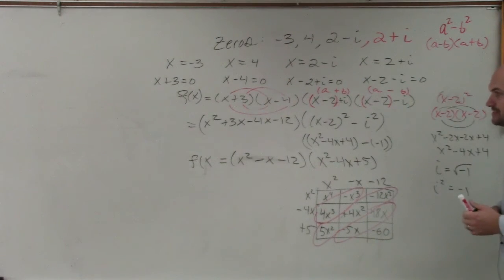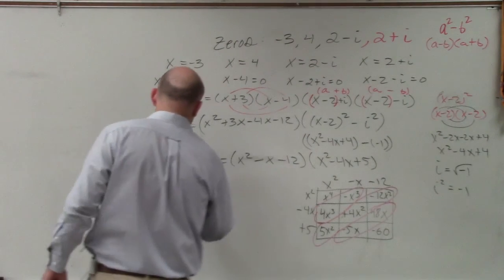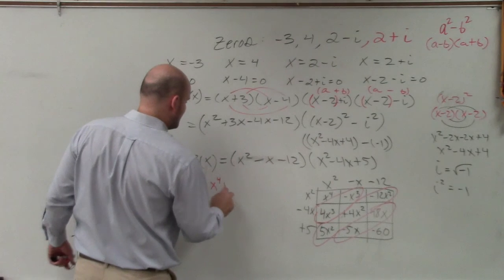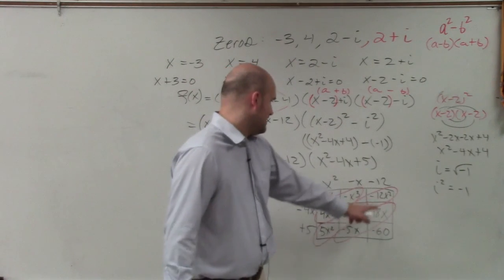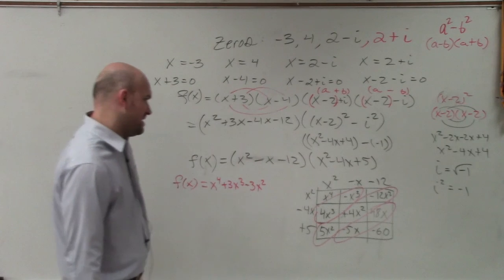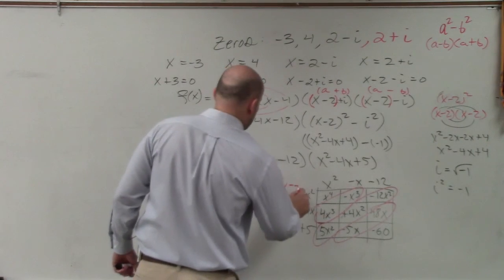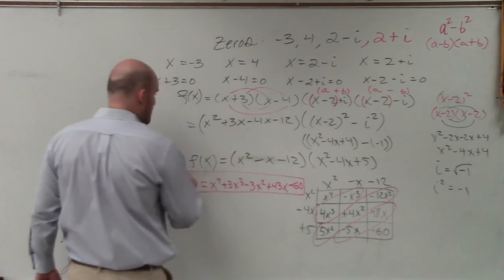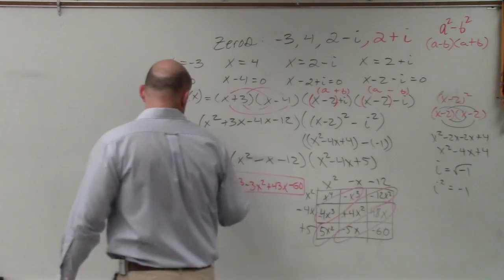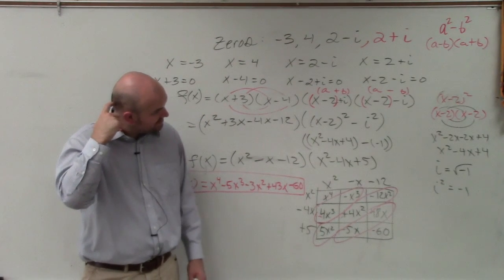So when combining them for the final answer, f(x) equals x⁴ plus 3x³ minus 3x² plus 43x minus 60. Wait, wasn't that supposed to be negative 4x²? Students catch another error. Yes, you're right. Thank you. Any other mistakes, or is that good? Any other mistakes? Okay.